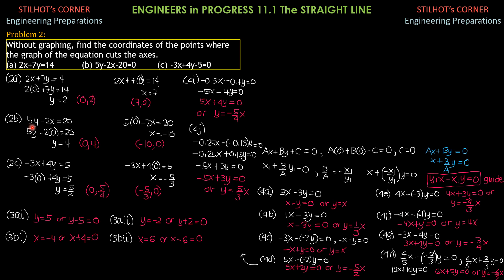We proceed to 2b: 5y - 2x = 20. Set x = 0 first: 5y - 2(0) = 20, so y = 20/5 = 4. Therefore, the line 5y - 2x - 20 = 0 cuts the y-axis at the point (0, 4). Then, set y = 0: 5(0) - 2x = 20, so x = 20/(-2) = -10. So, the line cuts the x-axis at the point (-10, 0).